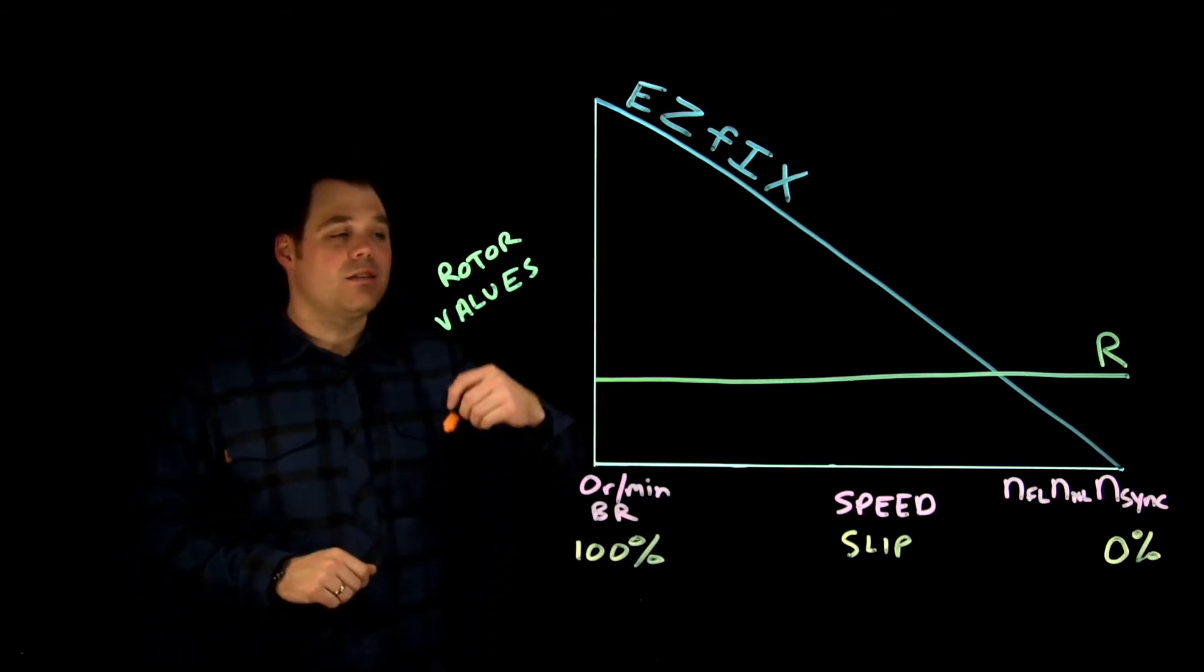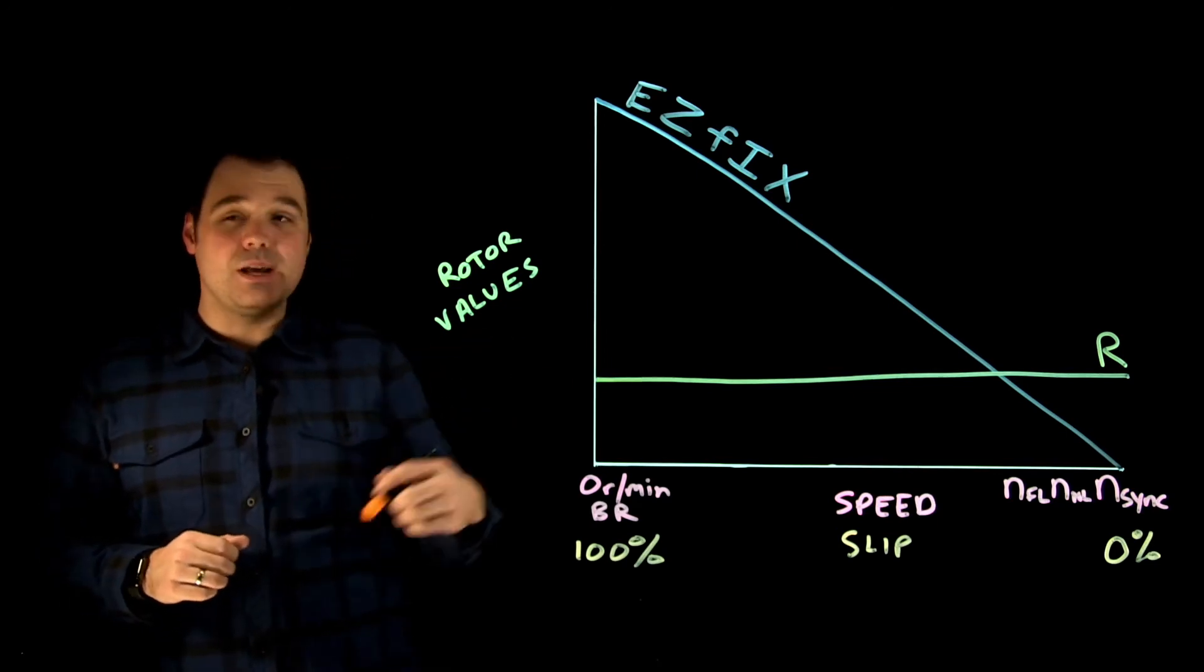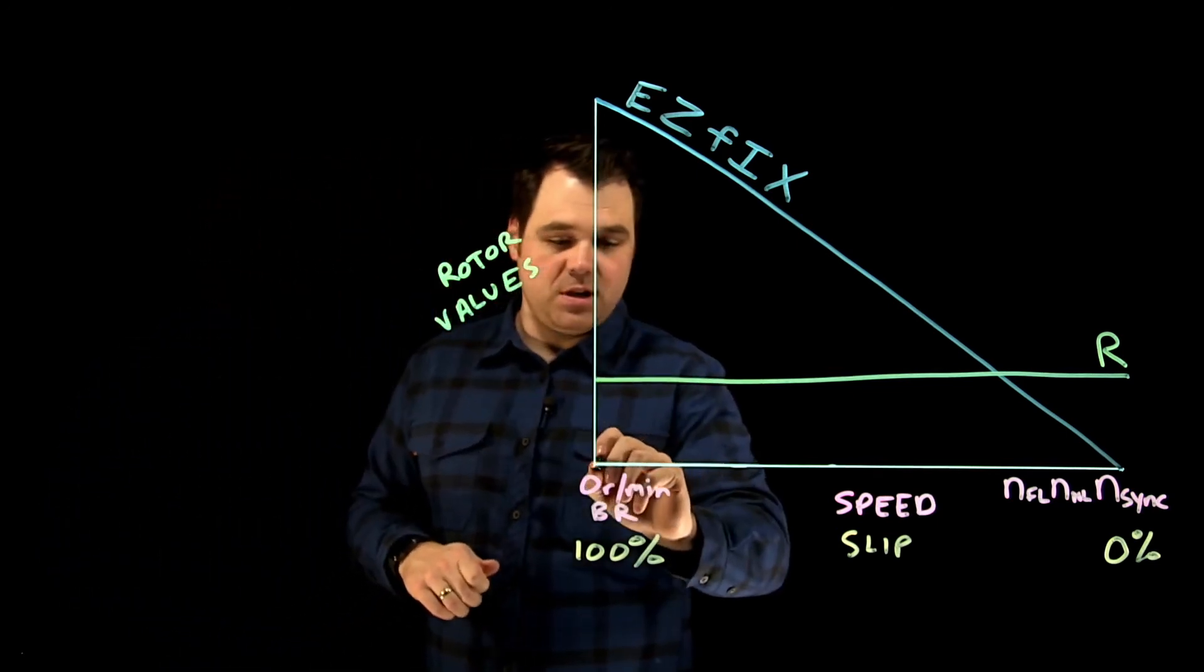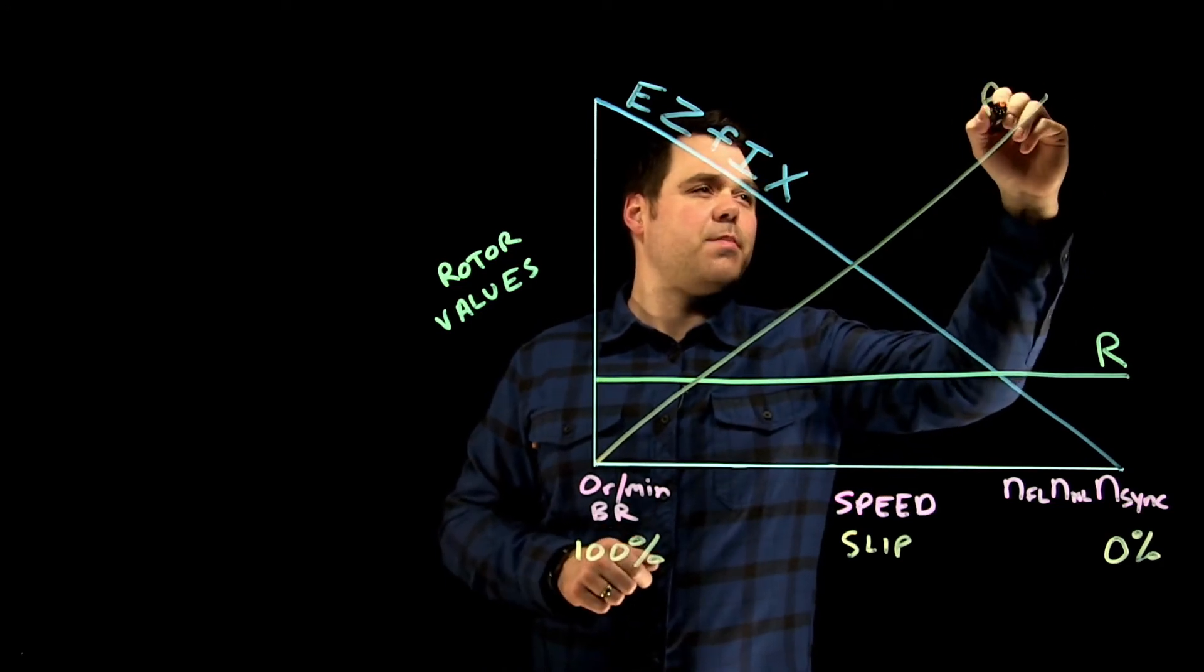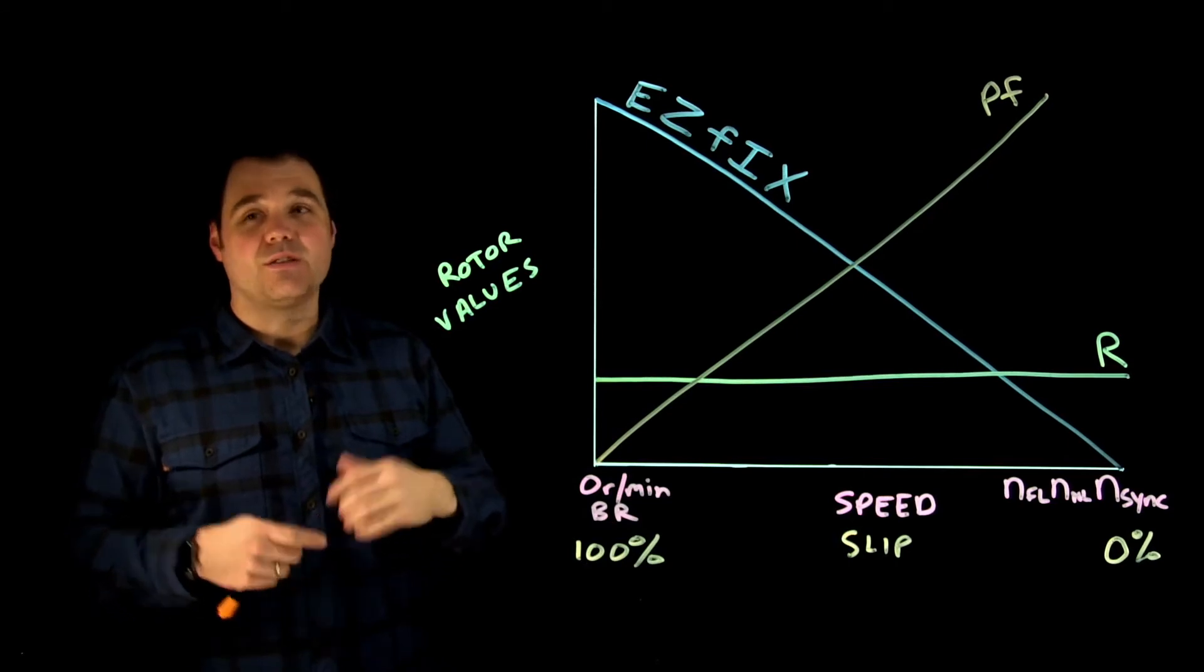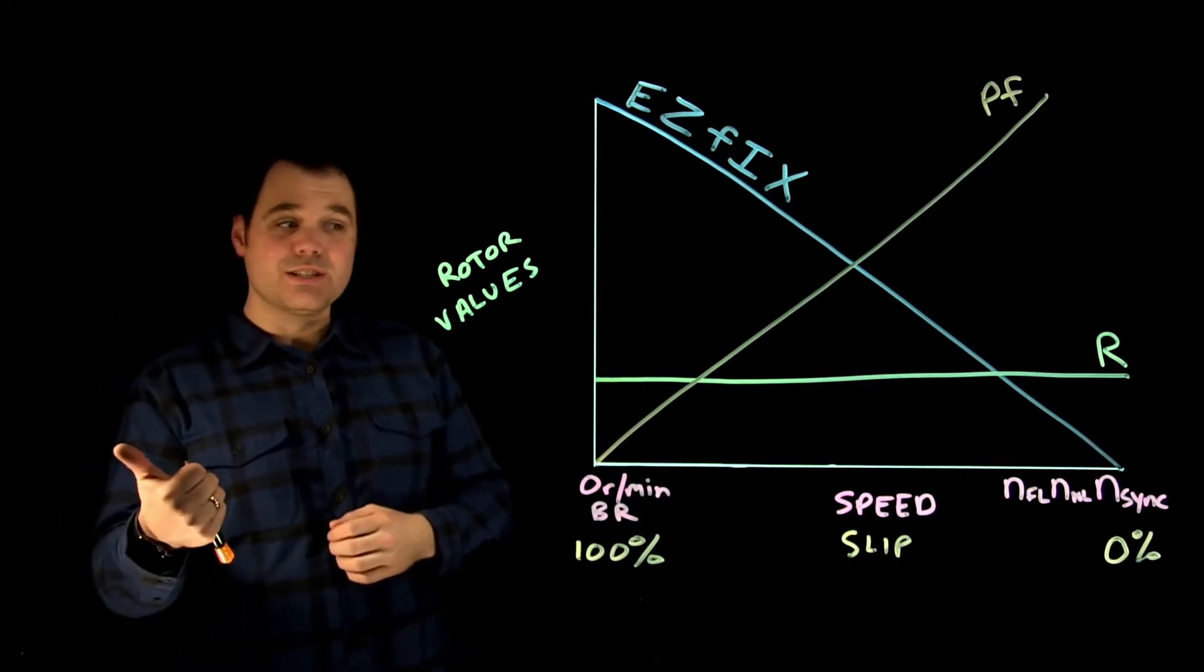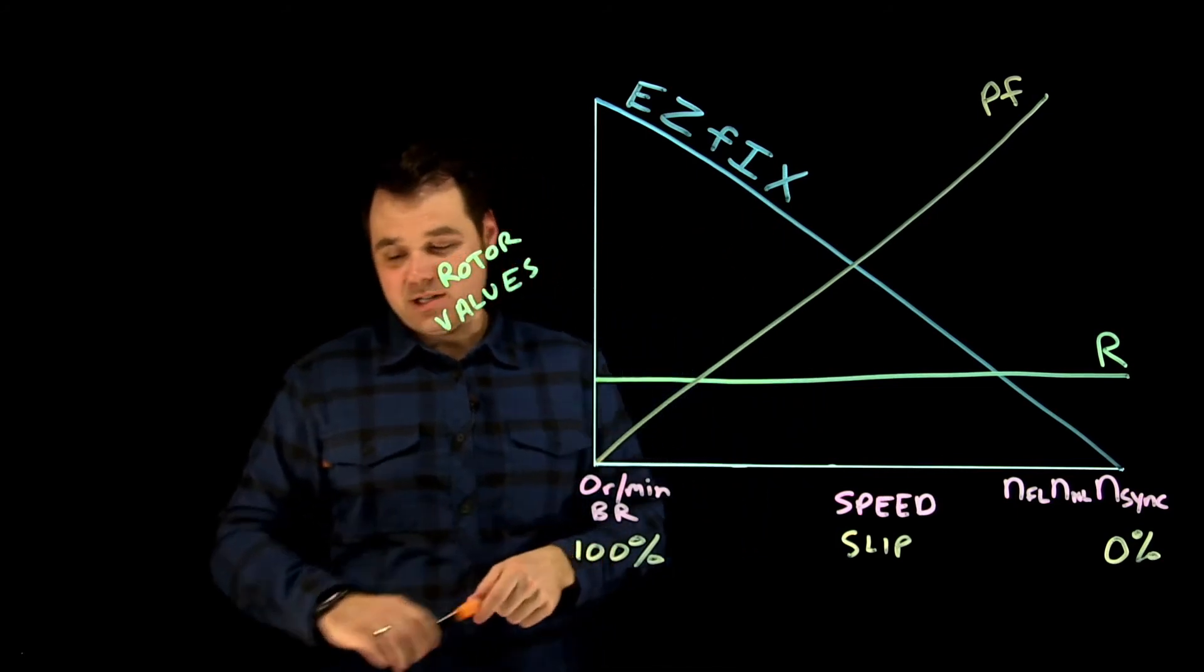And then the other thing, there's something that's inversely proportional to slip, which would be maybe you guessed it, but that's actually the power factor inside the rotor. So the power factor being the relationship between the resistance of the rotor and the reactance of the rotor or the inductive reactance.